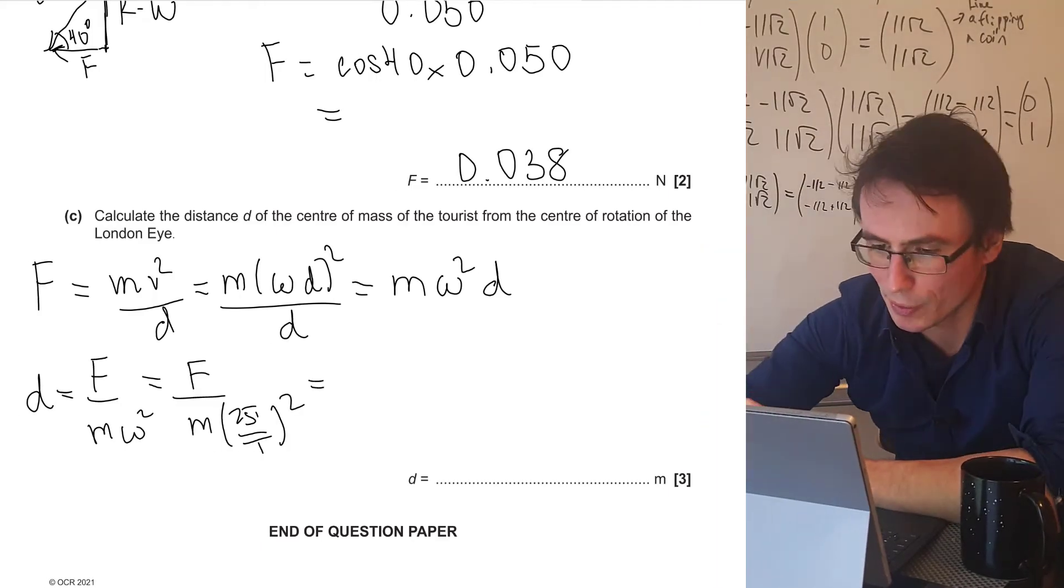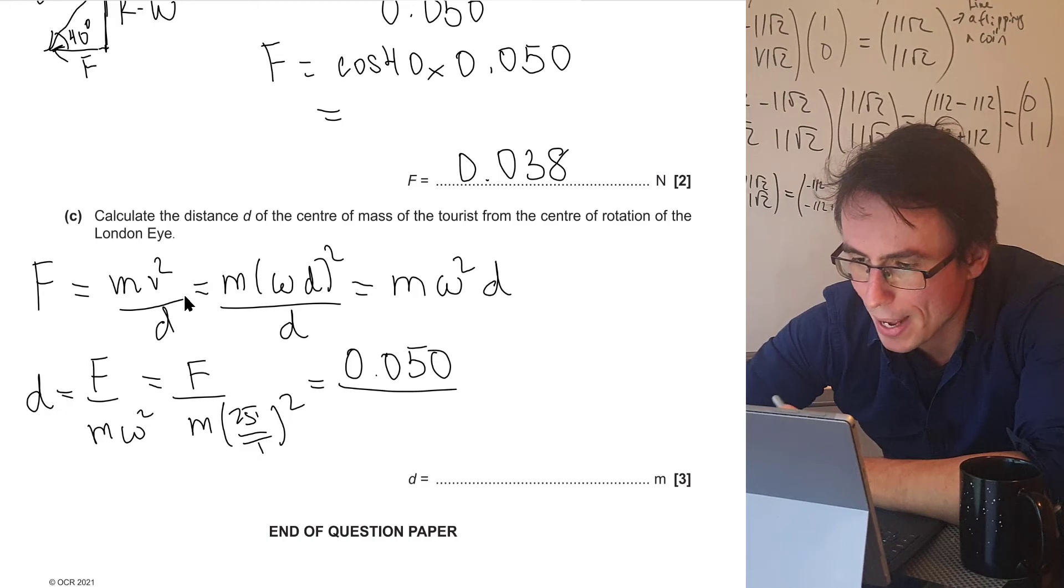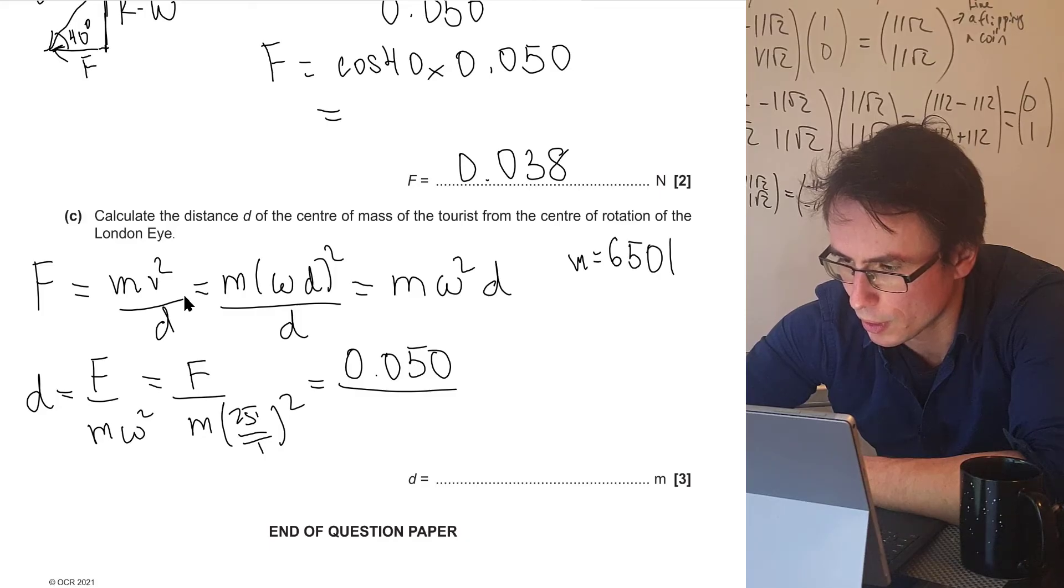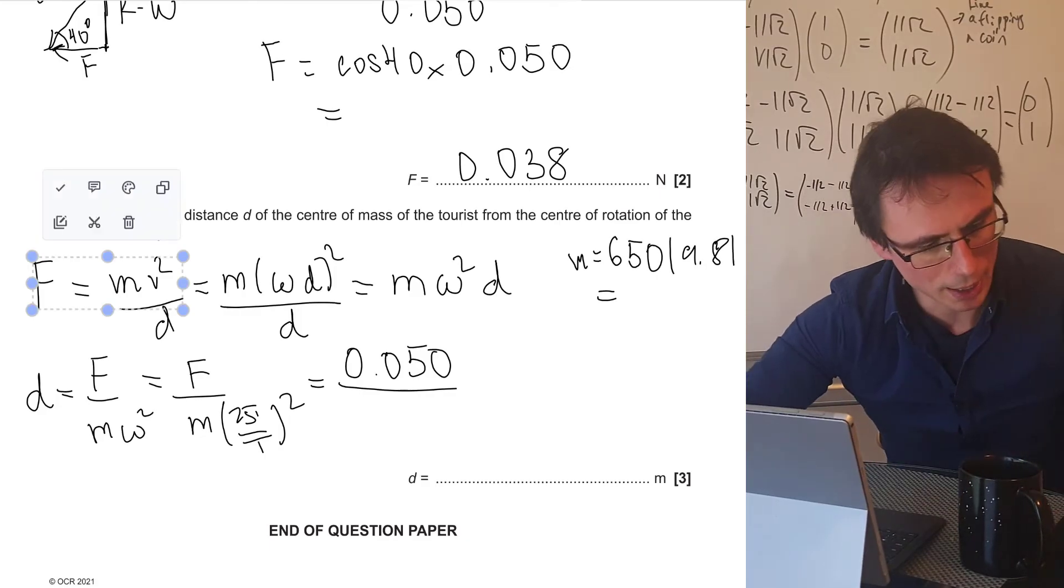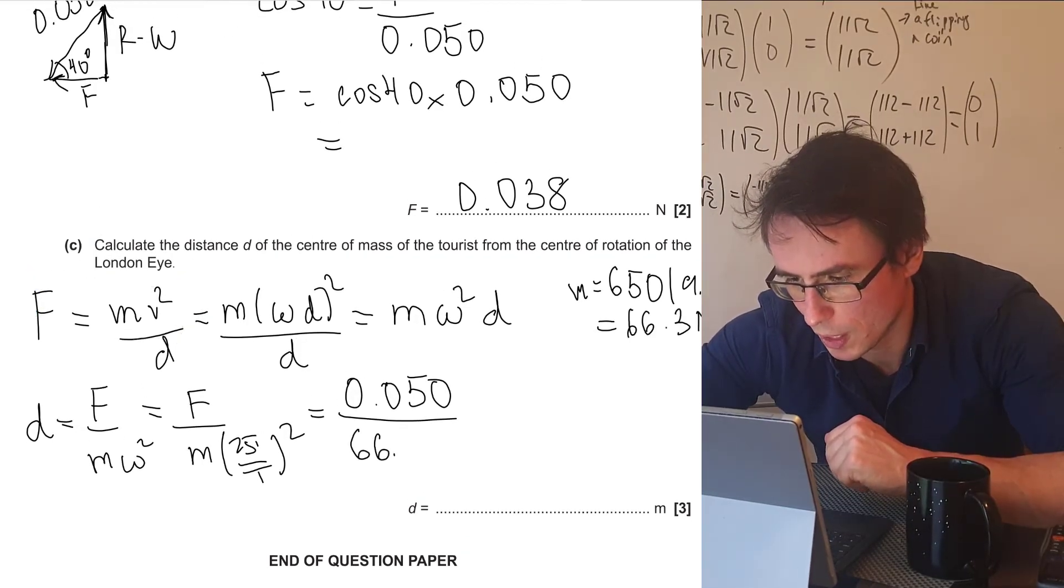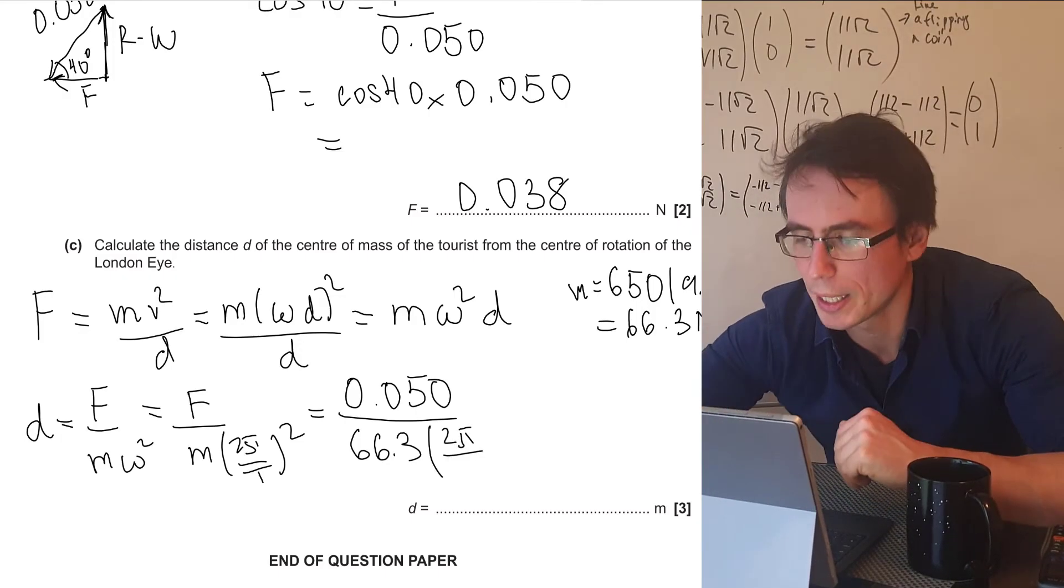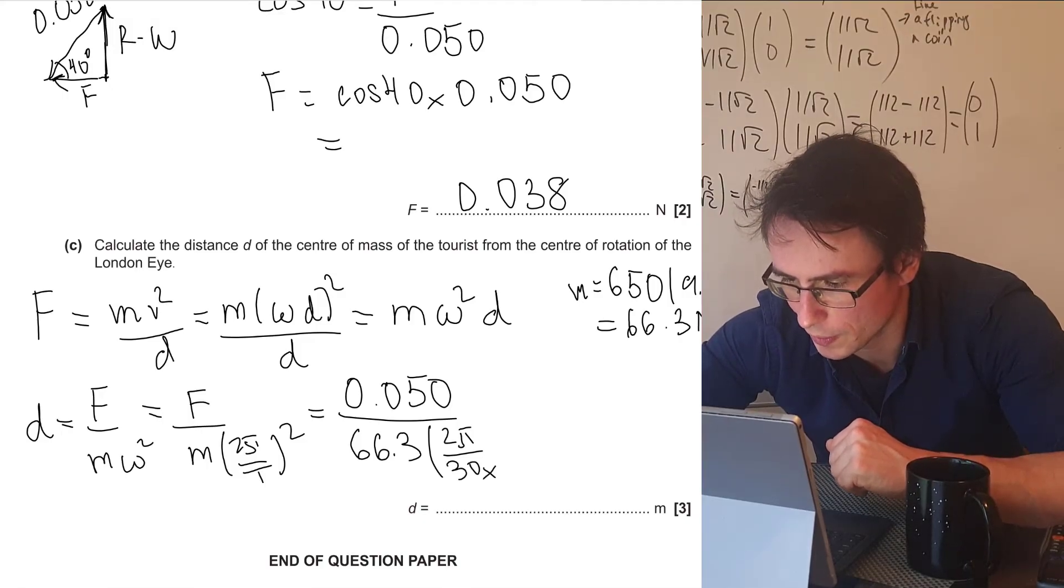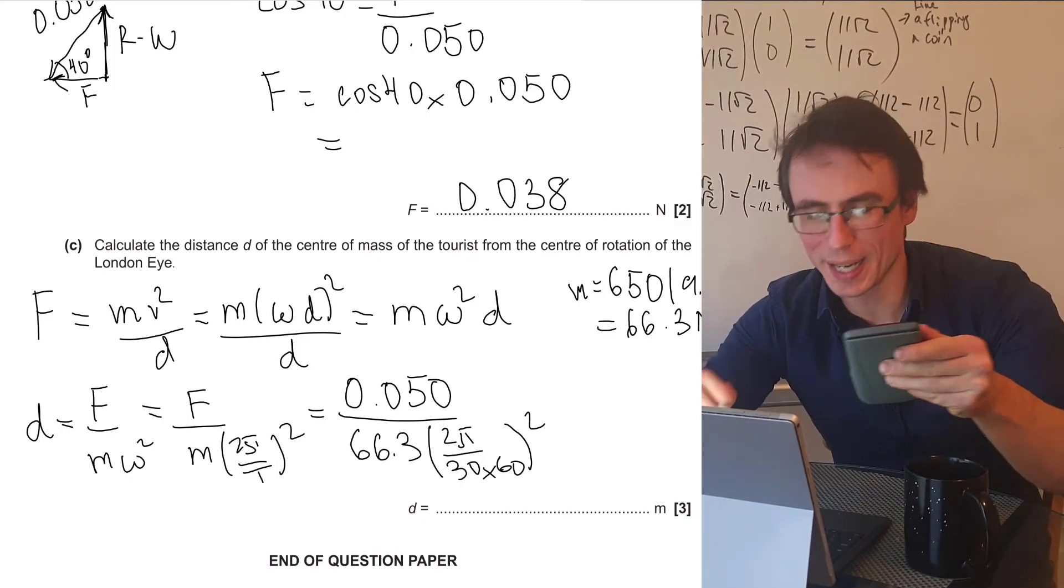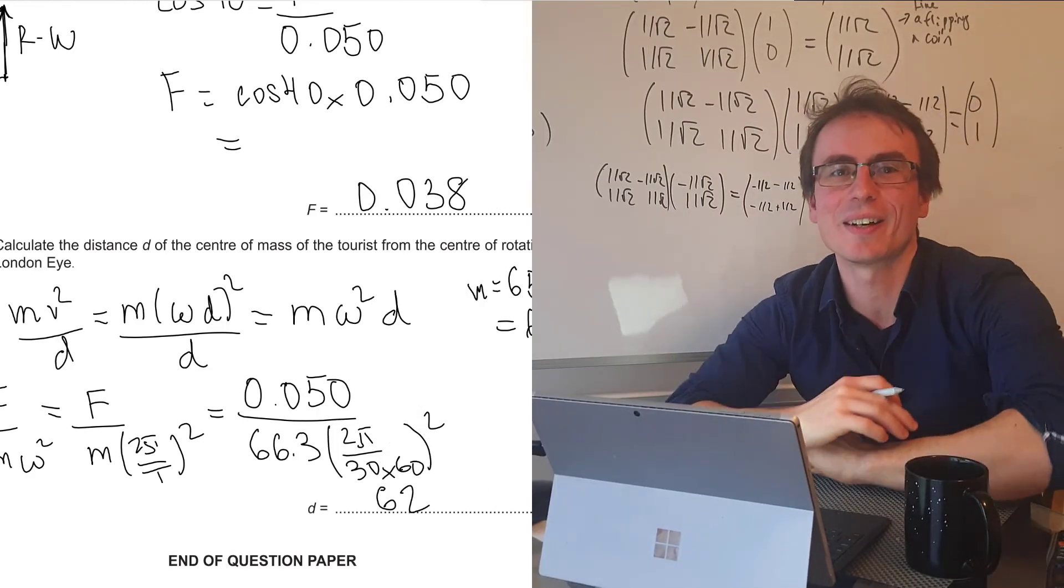Now we're ready to plug in some numbers. So the force is equal to 0.05. The mass is going to be equal to 650 newtons divided by 9.81, which is 66.3 newtons multiplied by 2 pi divided by 30 minutes. Each of them has 60 seconds and then do not forget the square. And this is equal to around 61.89 or let's just call it 62 meters. And this is the radius of the Eye of London.